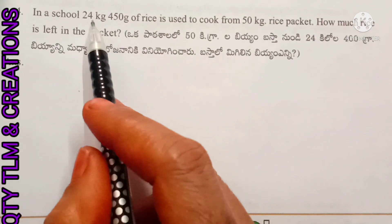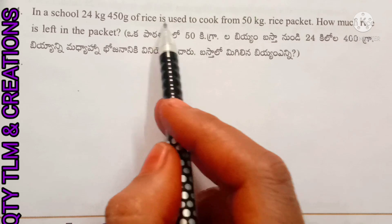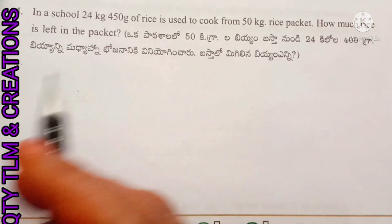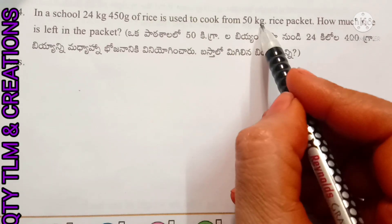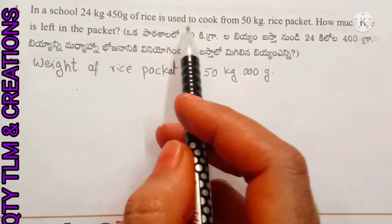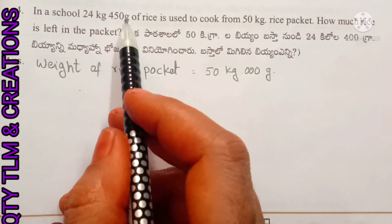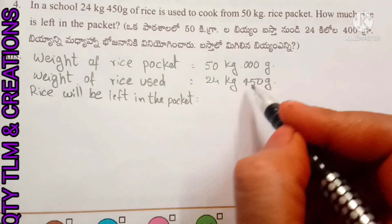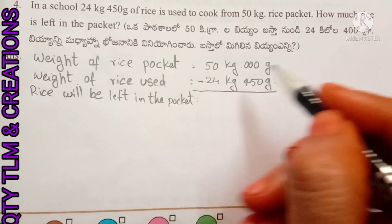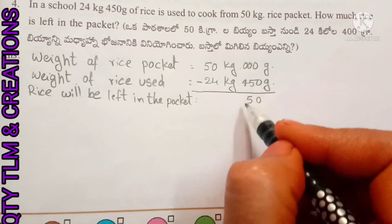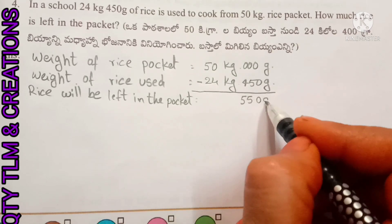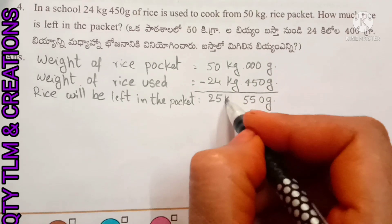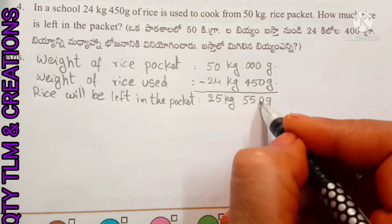Next question: in a school, 24 kilos 450 grams of rice is used to cook from a 50 kilogram rice packet. How much rice is left in the packet? Weight of rice packet: 50 kilograms; weight of rice used for cooking: 24 kilos 450 grams. Rice left in the packet: we subtract, and we get 25 kilograms 550 grams.